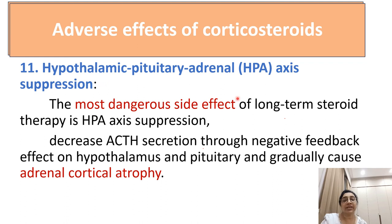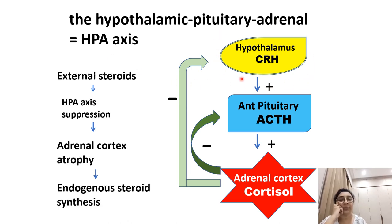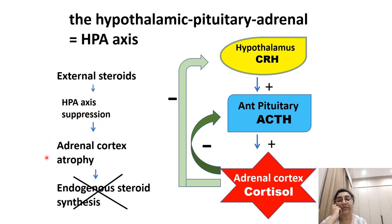Hypothalamo-pituitary-adrenal (HPA) axis suppression is the most dangerous side effect of long-term steroid use. It decreases ACTH secretion through a negative feedback effect on the hypothalamus and pituitary gland, and ultimately adrenocortical atrophy can occur. When stress occurs, the hypothalamus releases CRH, which stimulates the anterior pituitary to release ACTH, which in turn stimulates the adrenal cortex to release cortisol. When cortisol is present in the blood, negative feedback activates and inhibits the hypothalamus from releasing CRH and the anterior pituitary from releasing ACTH. External steroid therefore suppresses the HPA axis, causing adrenocortical atrophy and inhibiting endogenous steroid synthesis.